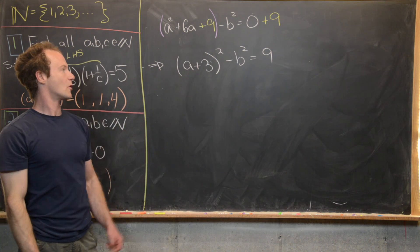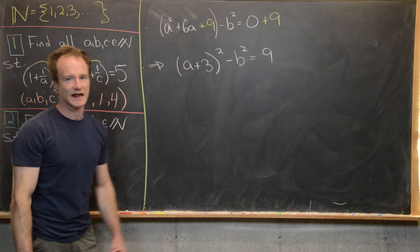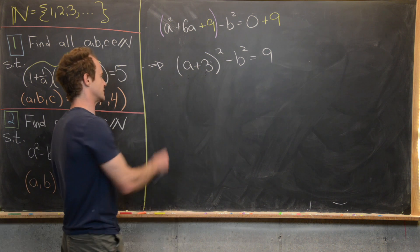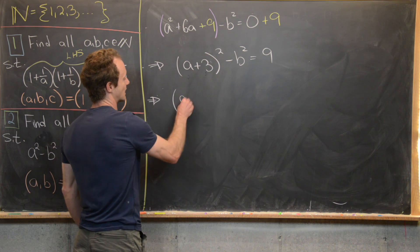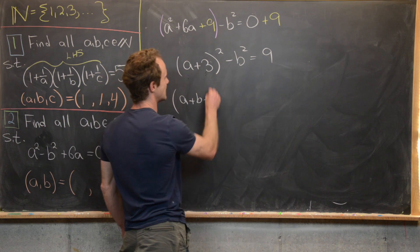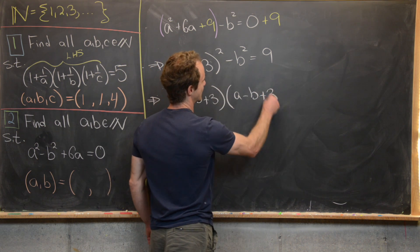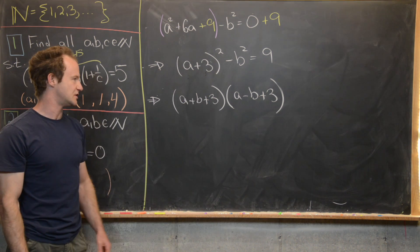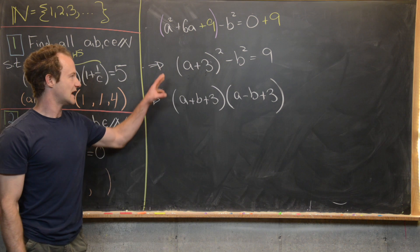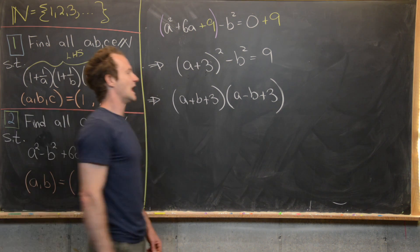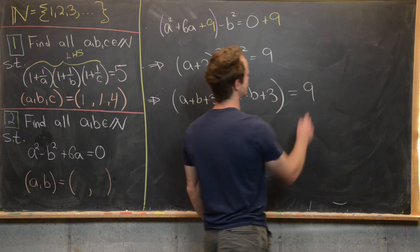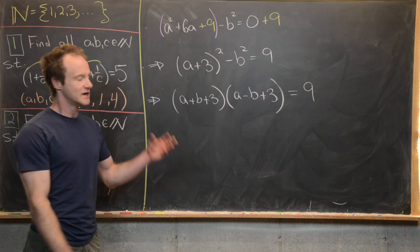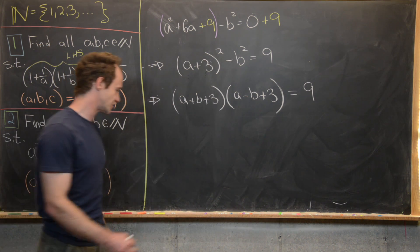We have a difference of squares: (a + 3)² − b², which factors as (a + b + 3)(a − b + 3) = 9. Now, given that a and b are natural numbers, there are only two possible factorizations: 1 × 9 or 3 × 3.